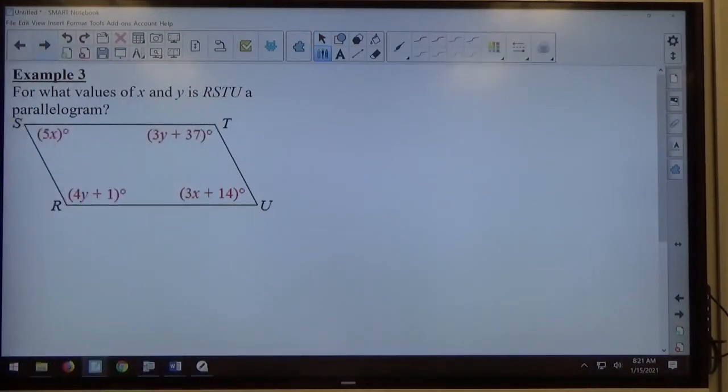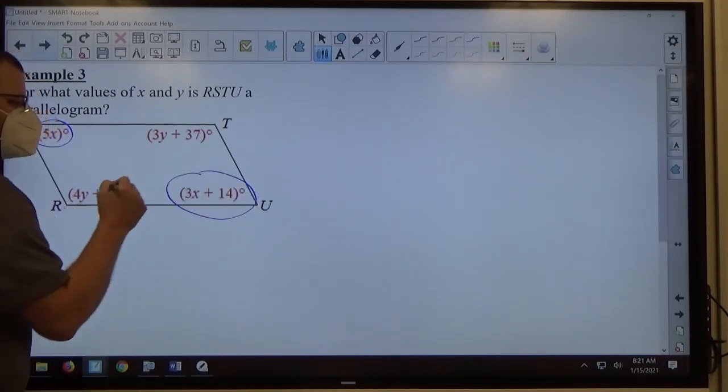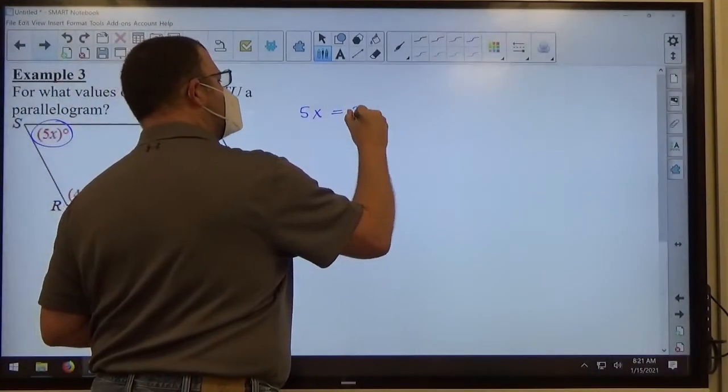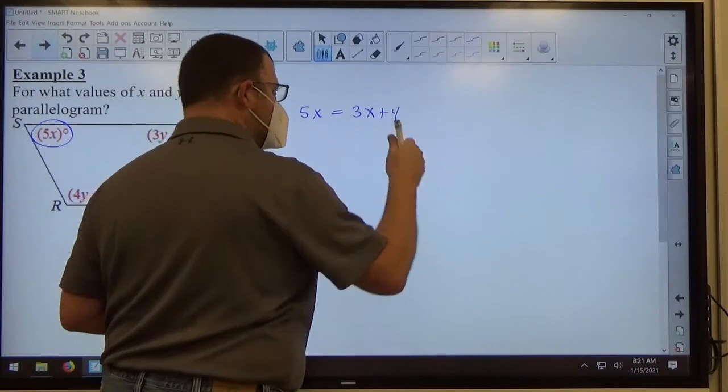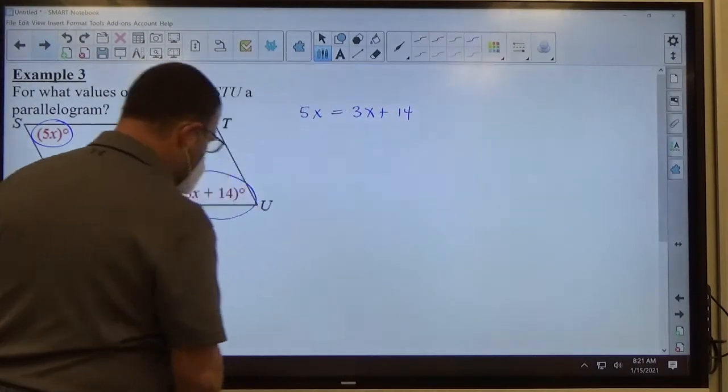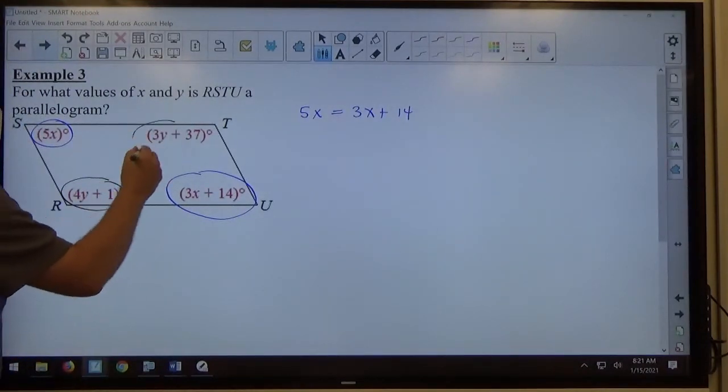So if both pairs of opposite angles are congruent, you have a parallelogram. So if 5x is equal to 3x plus 14, and at the same time 4y plus 1 is equal to 3y plus 37,